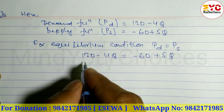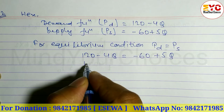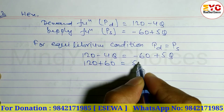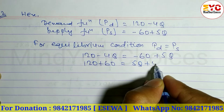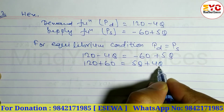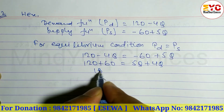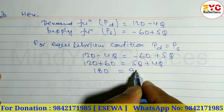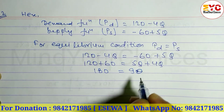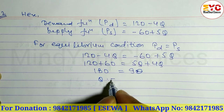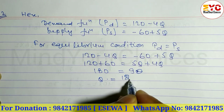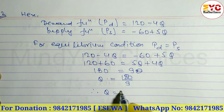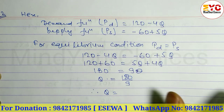We bring 60 to the left side, so 120 + 60 = 5Q + 4Q. That gives us 180 = 9Q. Therefore Q = 180 divided by 9, which equals 20.